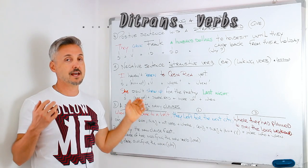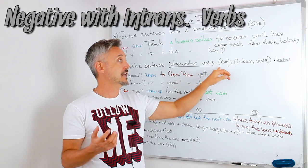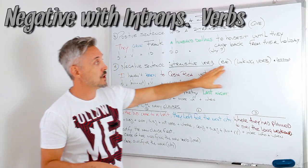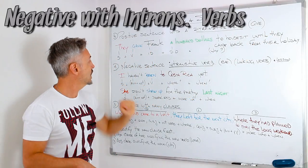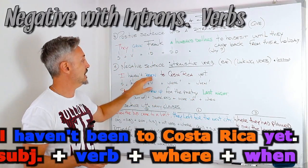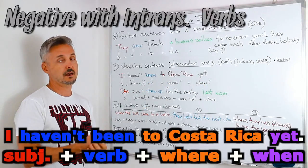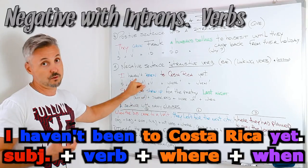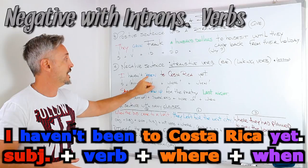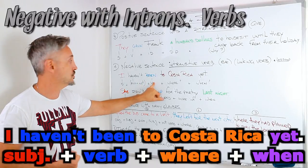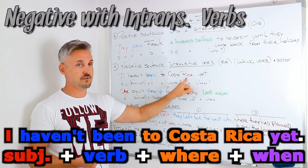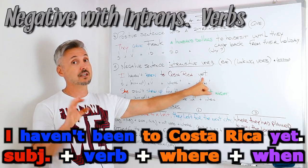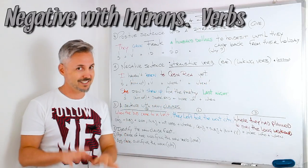Let's go over a negative sentence with an intransitive verb — in this case, be. Be is also considered a linking verb; there is a lesson on linking verbs you can click to watch. The example: I haven't been to Costa Rica yet. I is the subject, personal pronoun. Then haven't been — auxiliary plus not, because we are talking about the present perfect. Been is the past participle of the verb to be. Then where: to Costa Rica. And then when: yet. Yet usually goes at the end of the sentence, and usually for a negative sentence — but not always; there are always exceptions.